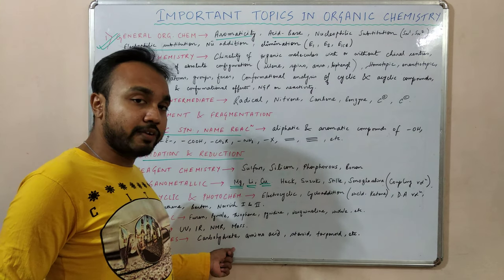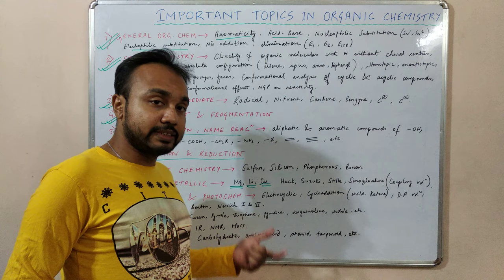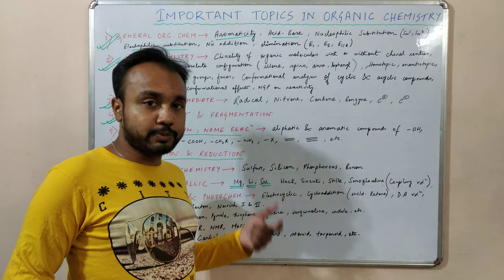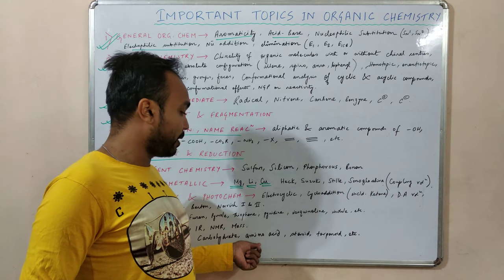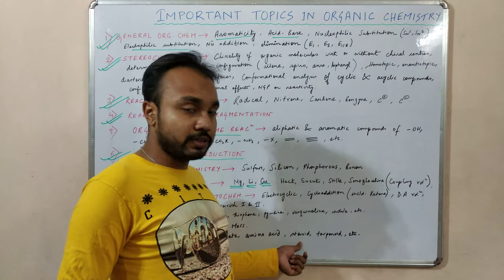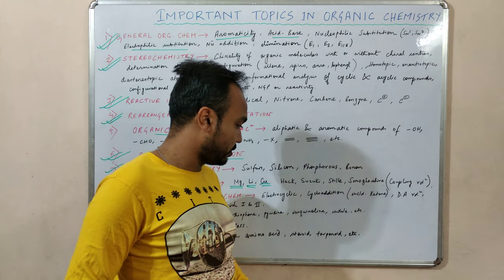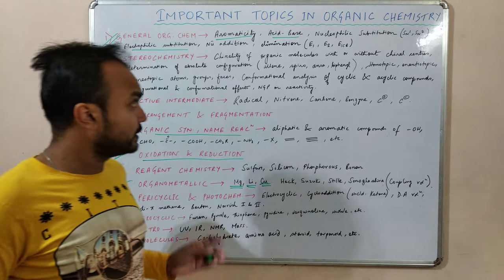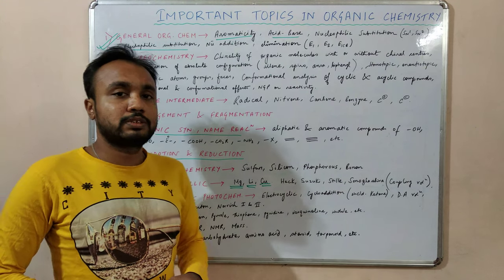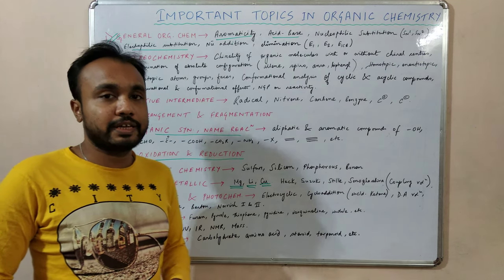Then comes biomolecules. In biomolecules we will study carbohydrate chemistry, then amino acids — determining the absolute configuration of amino acids and their structures — then steroids, terpenoids, etc. So this is the list of topics you need to focus on for your upcoming CSIR NET exam.